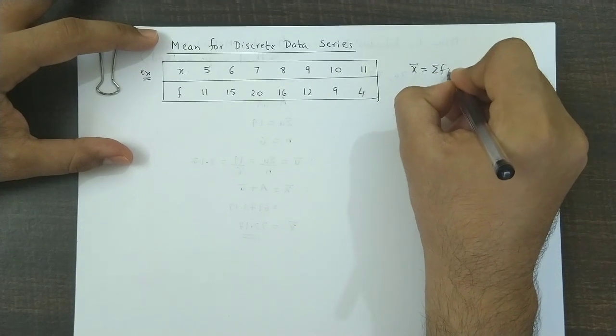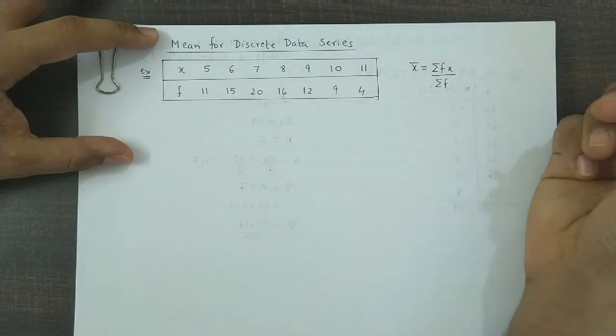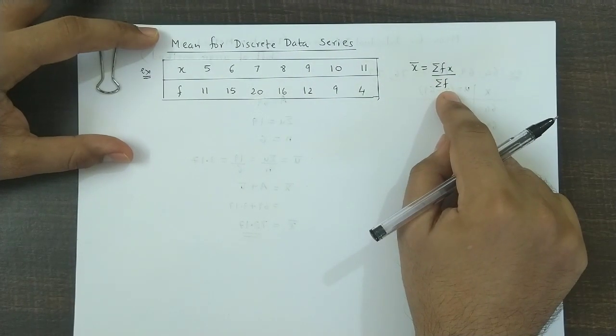Now the formula used for finding the mean for discrete data series is x̄ = Σfx / Σf, that is the total frequency. Based on this, we would prepare a table.